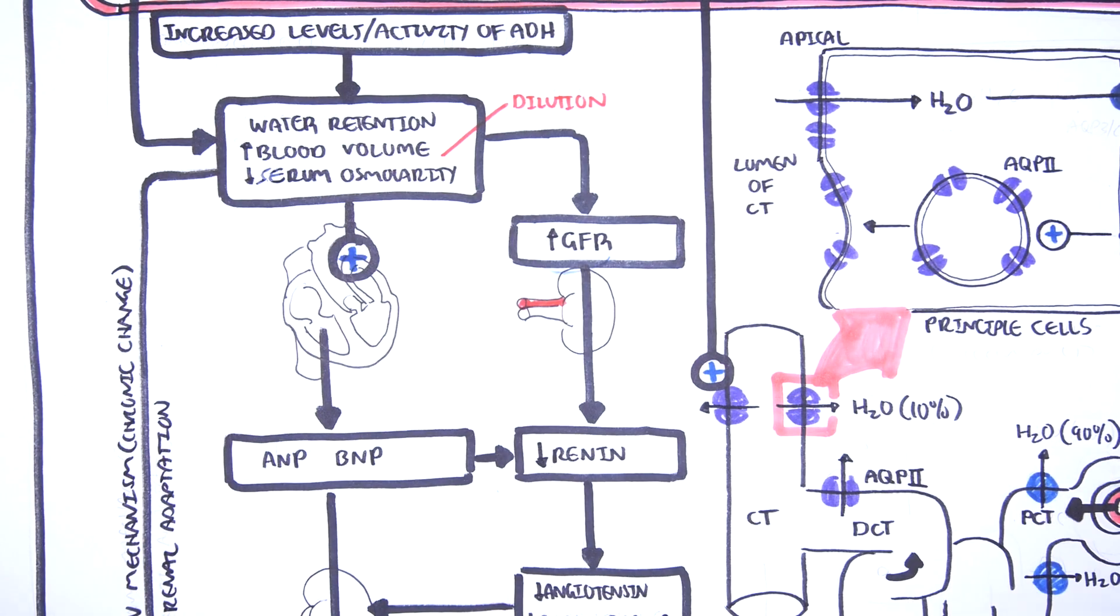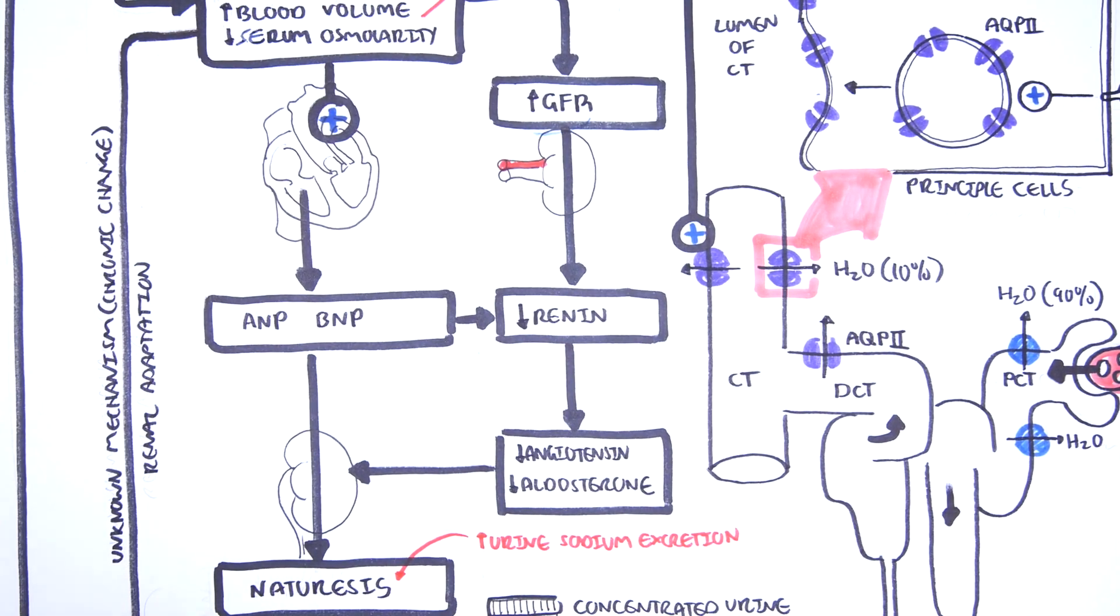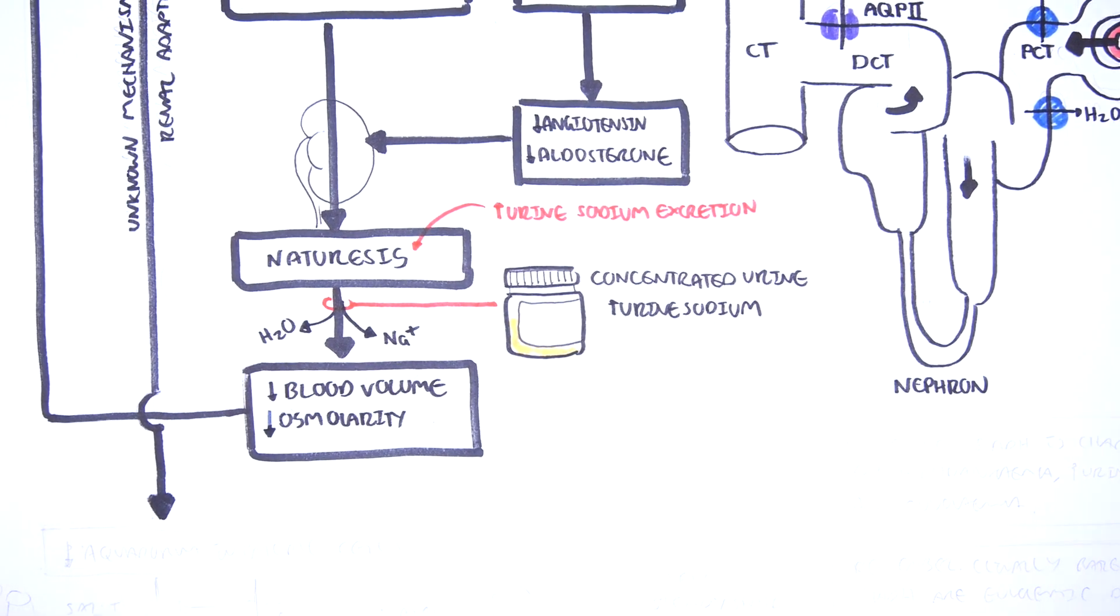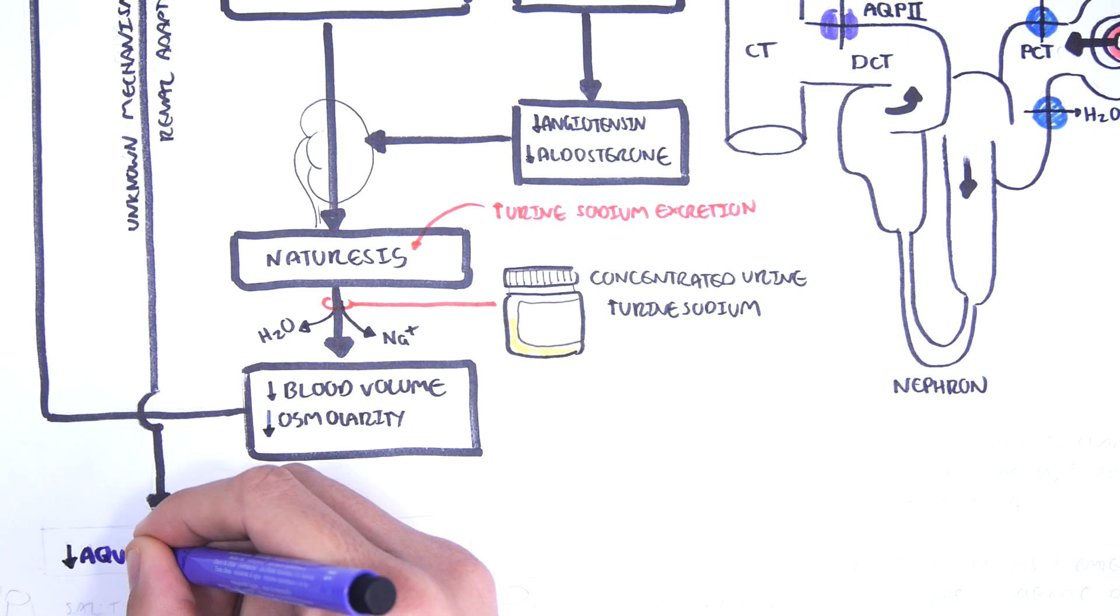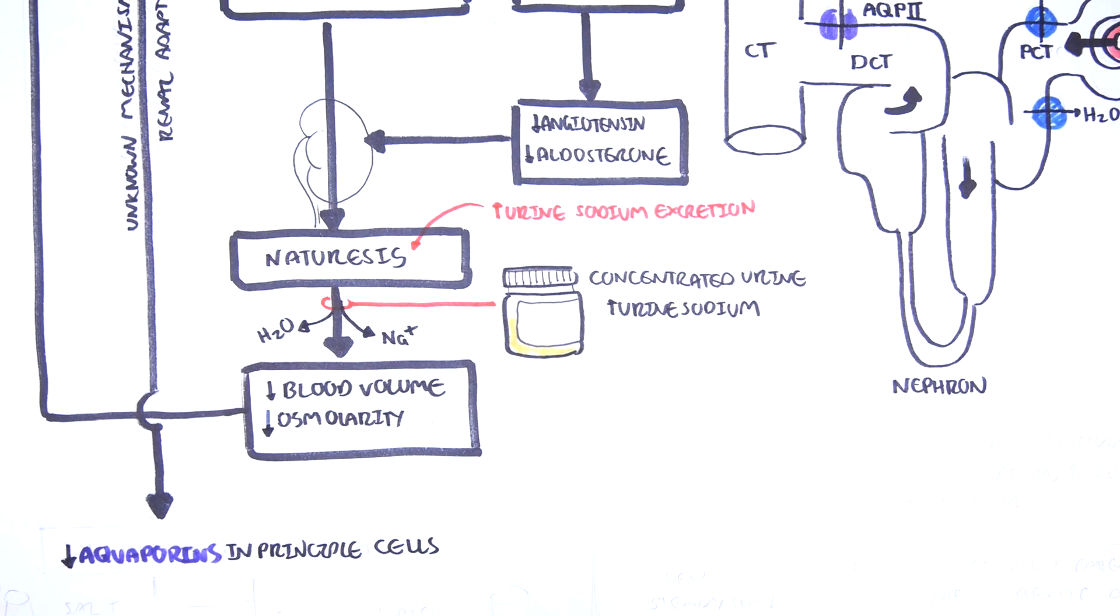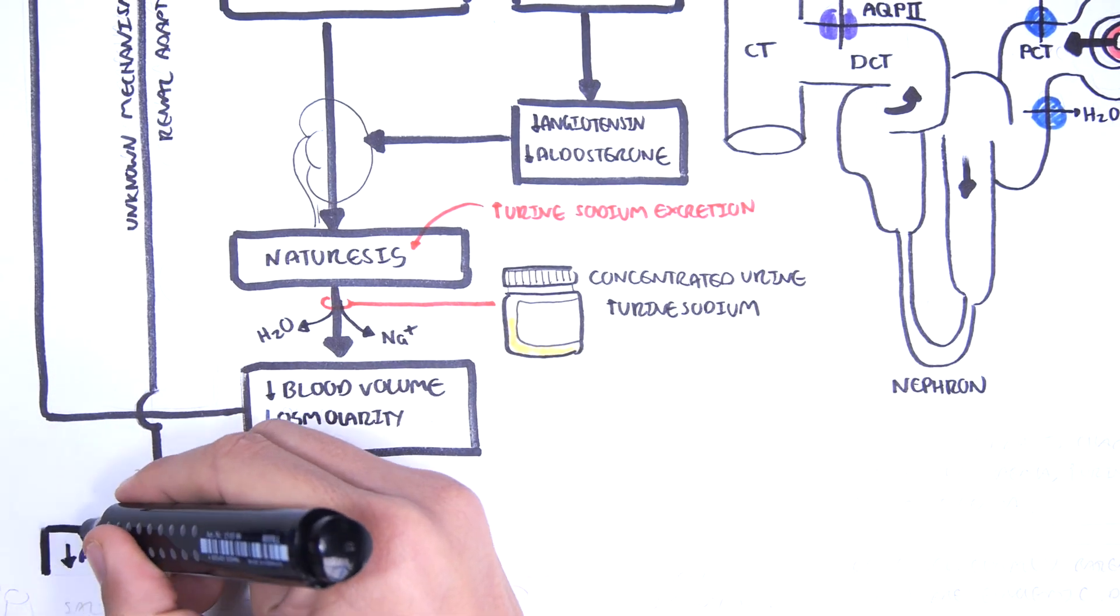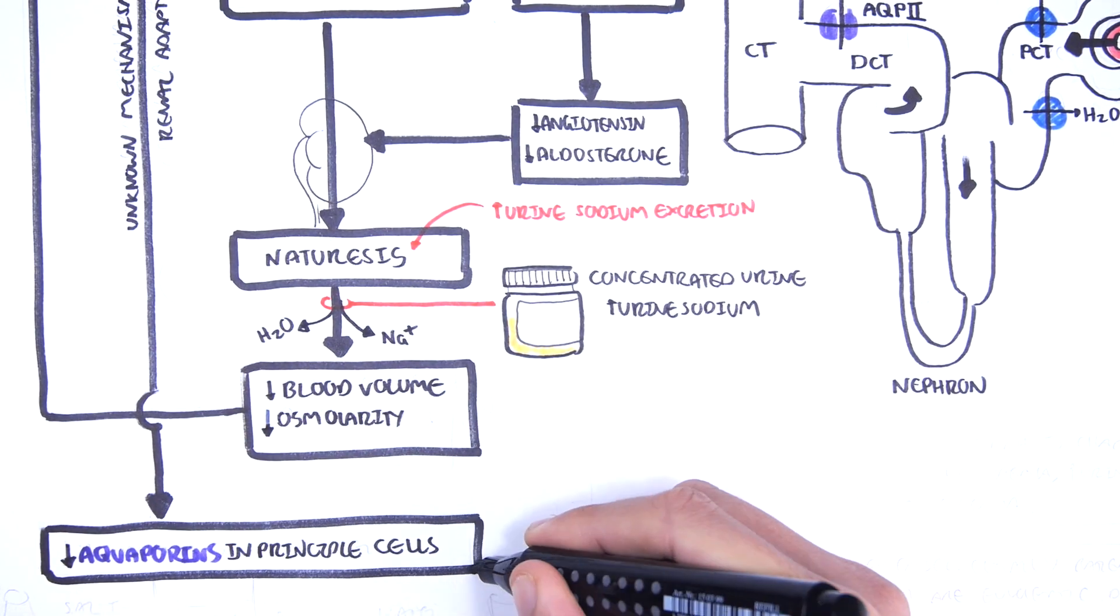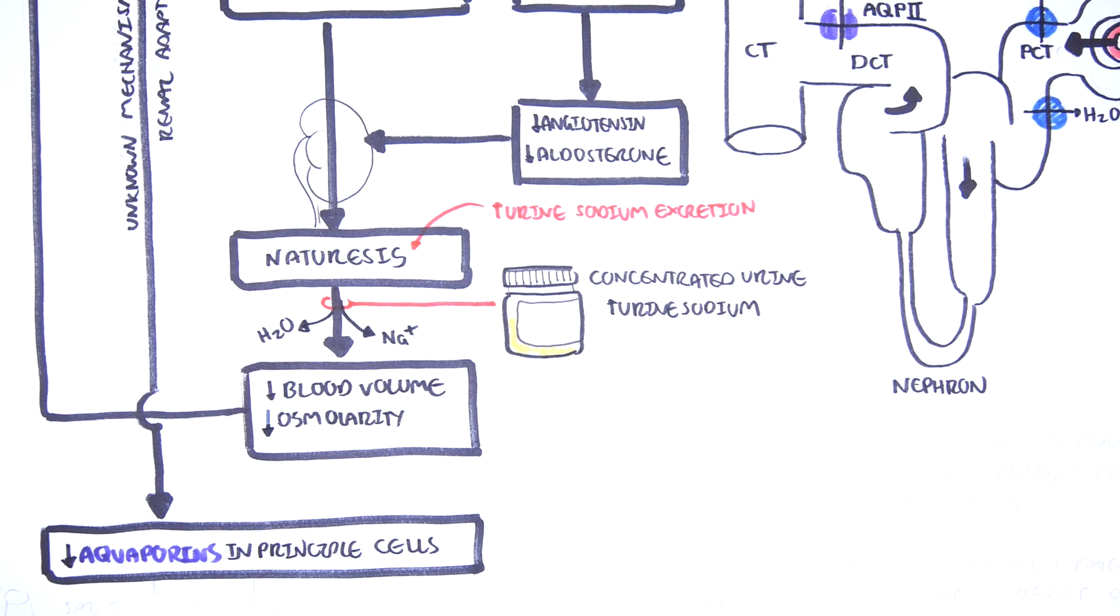When the kidneys begin adapting, they will try to do something interesting. The number of aquaporin channels decrease at the apical surface of principal cells, in order essentially to negate the increased amounts of ADH present. This means that the kidneys will learn not to reabsorb water.